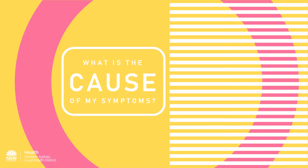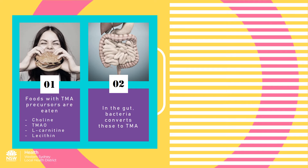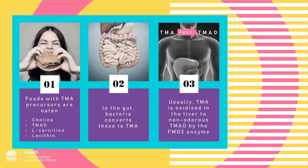In order to understand how diet can help to reduce TMAU symptoms, it is important to understand what causes these symptoms. In our diets we consume many foods that contain choline, trimethylamine N-oxide which I'll call TMAO, carnitine and lecithin. In the gut, bacteria converts these substances or precursors into trimethylamine, TMA. Usually TMA is oxidized in the liver by the FMO3 enzyme into the non-odorous N-oxide form TMAO and excreted in the urine.